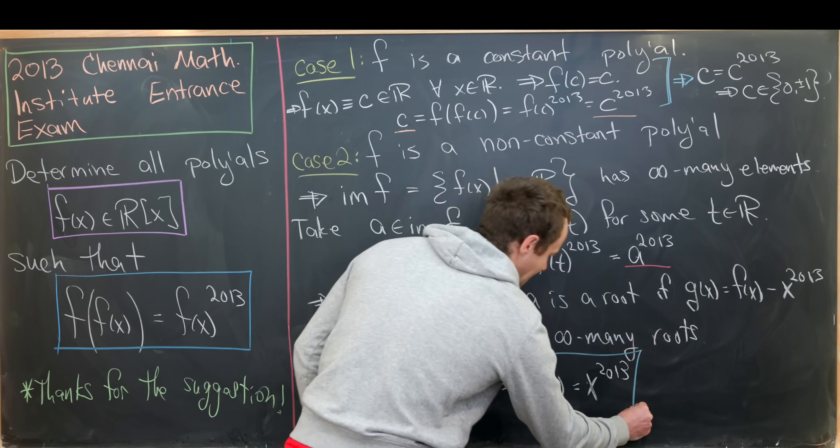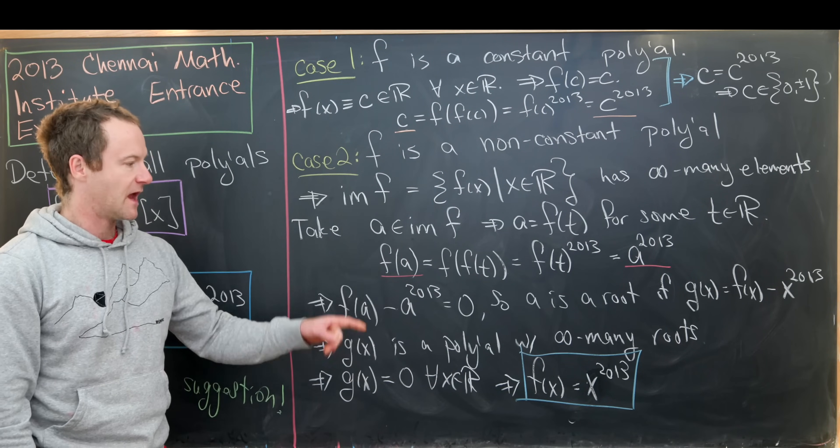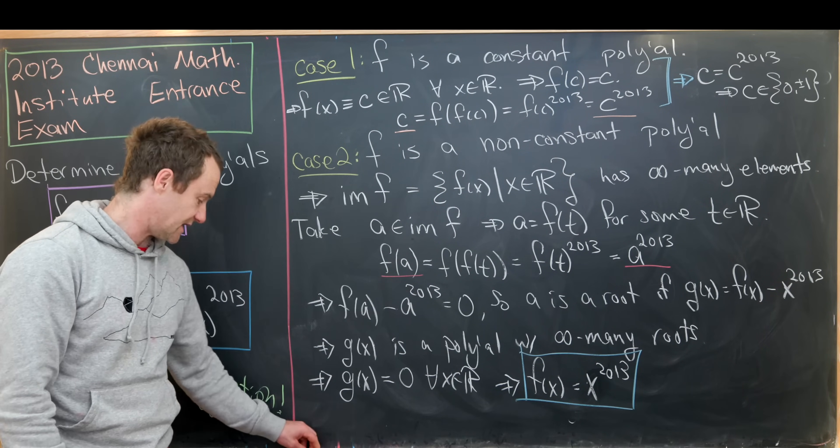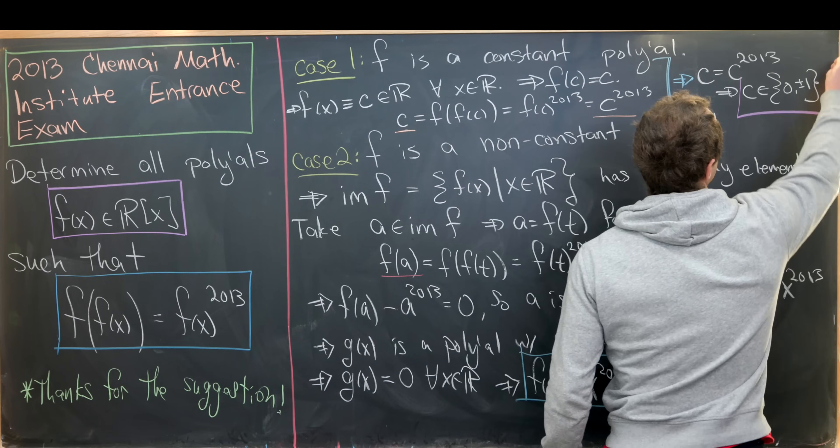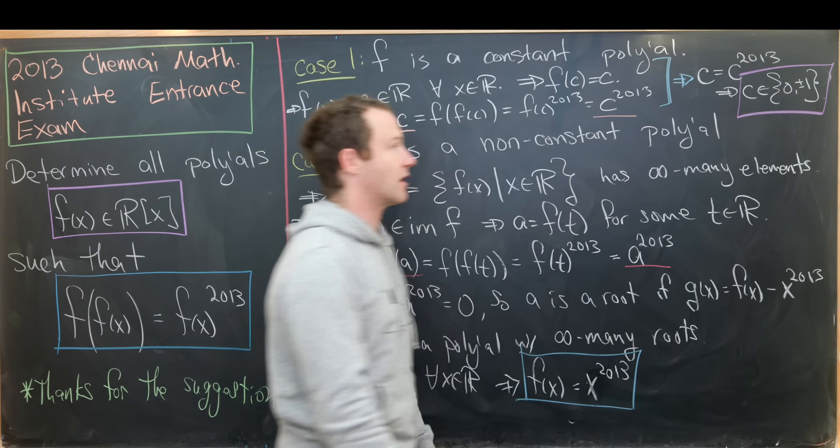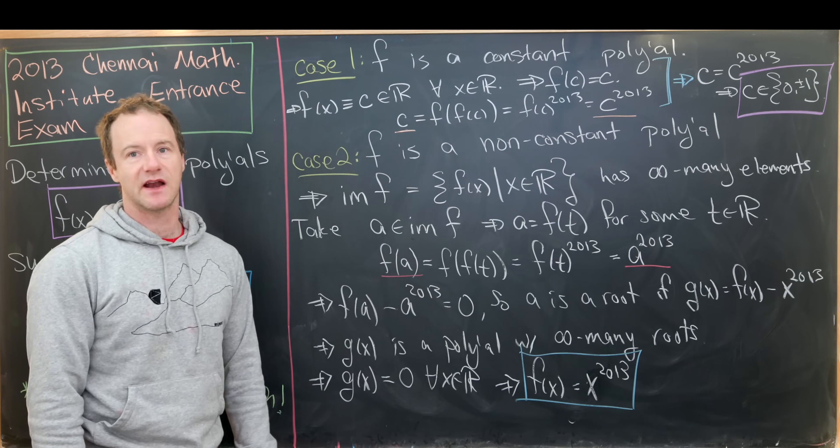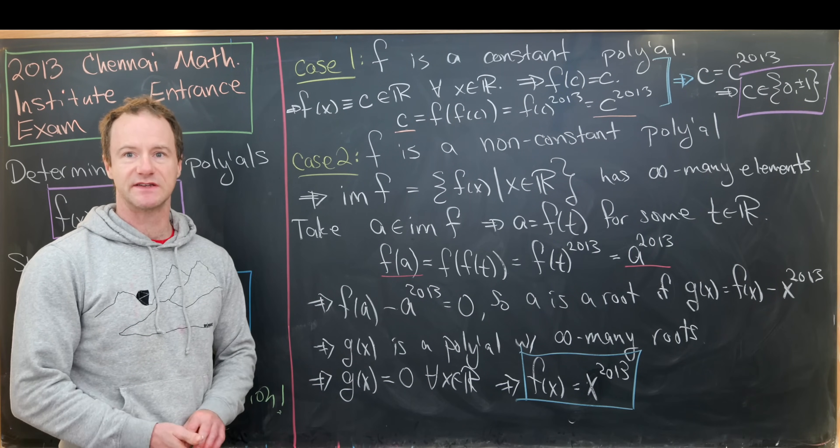So there we have our non-constant solution here: x to the 2013, to go along with our constant solutions which we described over here, which are zero and plus and minus one. And that's a good place to stop.